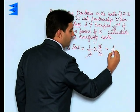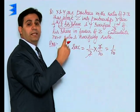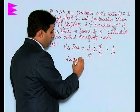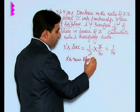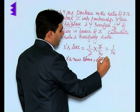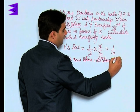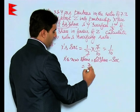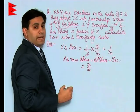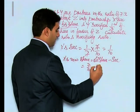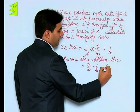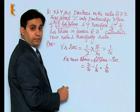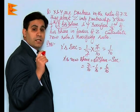That brings us to X's new share. X's new share equals old share minus sacrifice. The old share of X is 7/10th and the sacrifice of X is 1/10th, so the new share of X is 6/10th.